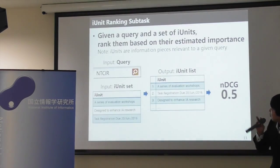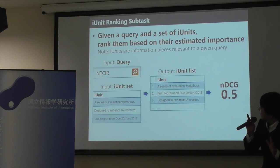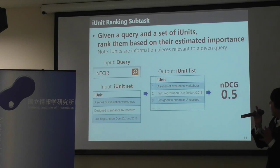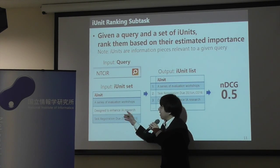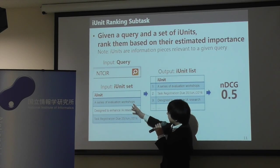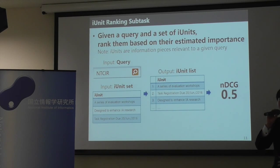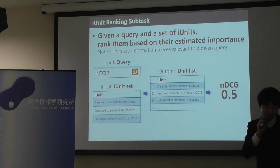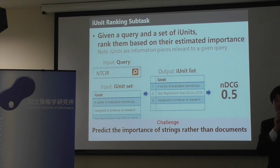Let me introduce the subtasks. The first subtask is the iUnit ranking subtask. Given a query and a set of iUnits — iUnit is something like information pieces relevant to the query — your task is to rank them based on their estimated importance. Your challenge is predicting the importance of strings rather than documents.